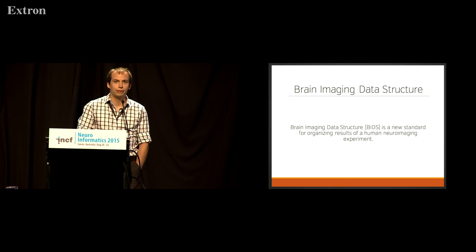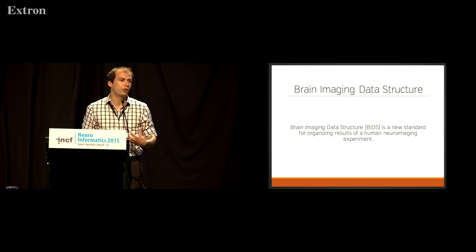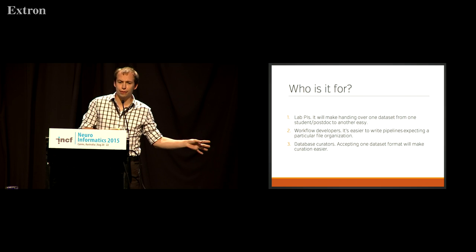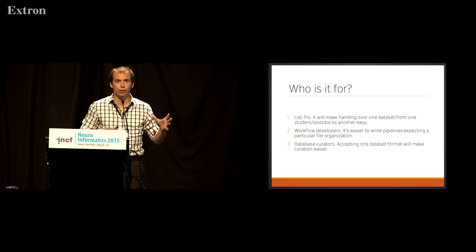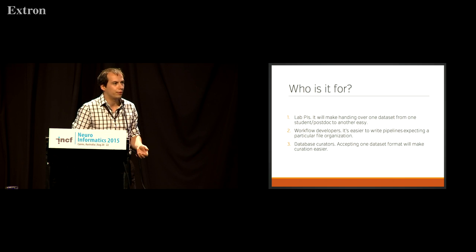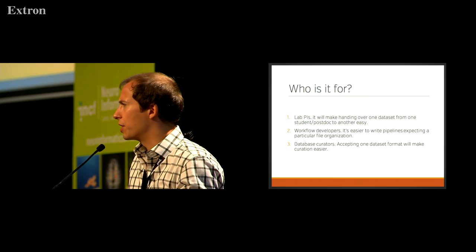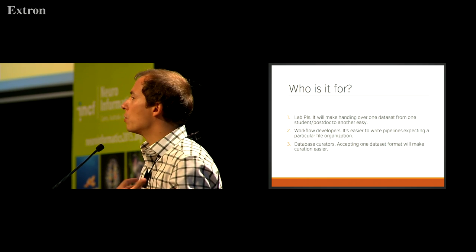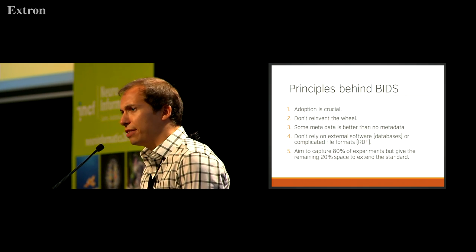So we decided to try to address this problem by proposing something called BIDS — Brain Imaging Data Structure — which is nothing else than a formal specification for arranging results of a human neuroimaging experiment, think MRI. Who is it for? It's for PIs, so you tell your students how they should arrange the data, keeping control and being able to transfer it between people in the lab, share it with collaborators, or even make it publicly available. You can also build workflows — it's for workflow developers so they know what to expect. And it's also for database people so it's easier to import existing datasets into more structured form.